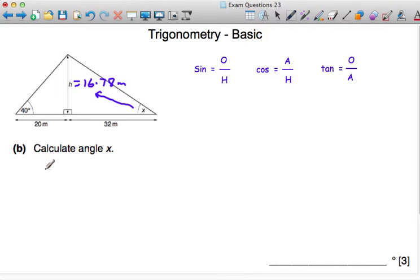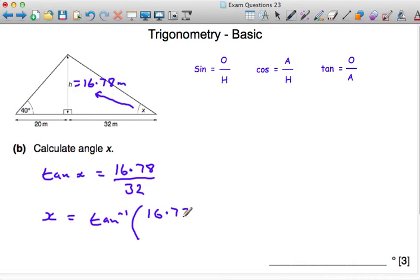So we can say the tan of angle x is equal to opposite over adjacent: 16.78 divided by 32. Now we also have a tan to the minus 1 function on the calculator, and the tan to minus 1 function says if you give me the tangent, I'll give you the angle. So x is equal to tan to minus 1 of this fraction, and it's essential that you put it in a bracket because this must be worked out before you apply the tan to minus 1.